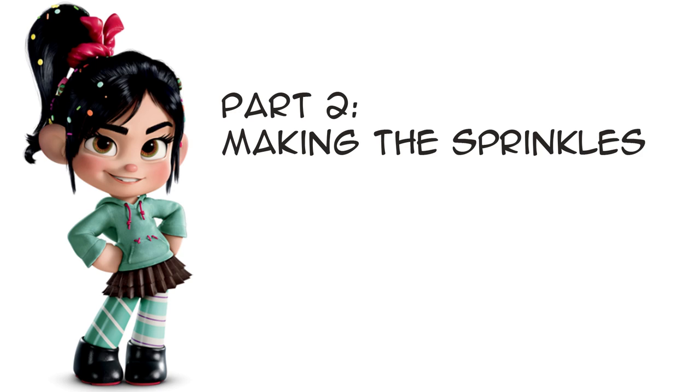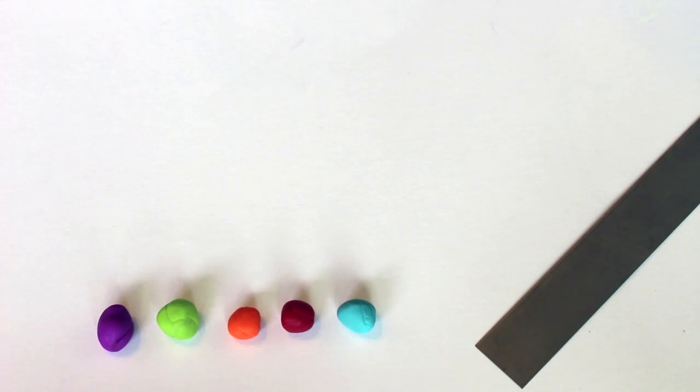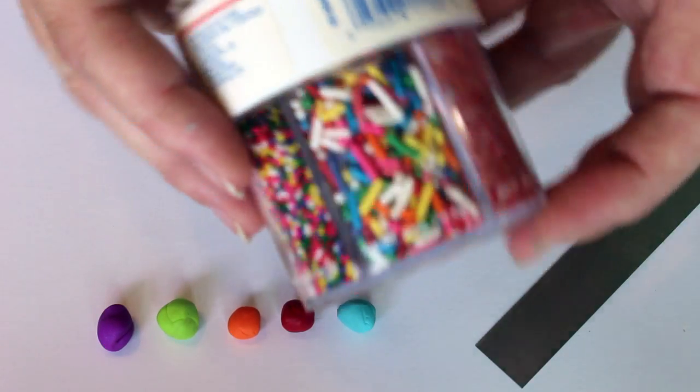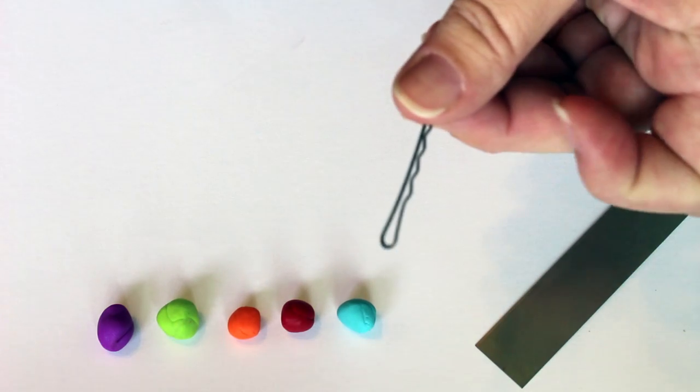Part 2: Making the Sprinkles. Real candy sprinkles are much too small to fit on a bobby pin, so we are going to make our sprinkles a bit larger than actual size.